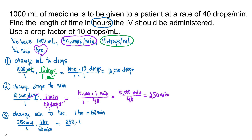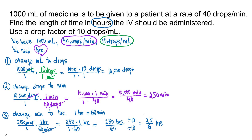You are multiplying fractions: 250 times 1 over 1 times 60, and we have hours. Minutes cancel out and you are left with hours. If we need to write the answer as a fraction, we reduce 250 over 60 by 10: 250 divided by 10 is 25, and 60 divided by 10 is 6. So 25 over 6 hours — this is the answer as an improper fraction. If we write it as a decimal, 25 divided by 6 gives us approximately 4.17 hours.